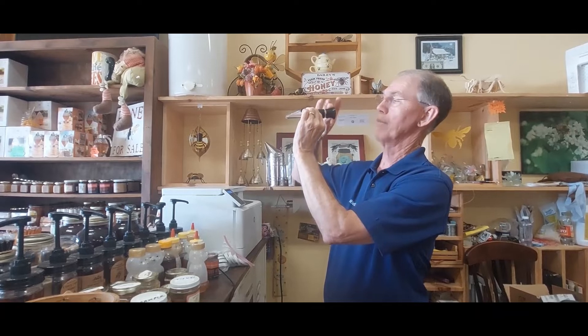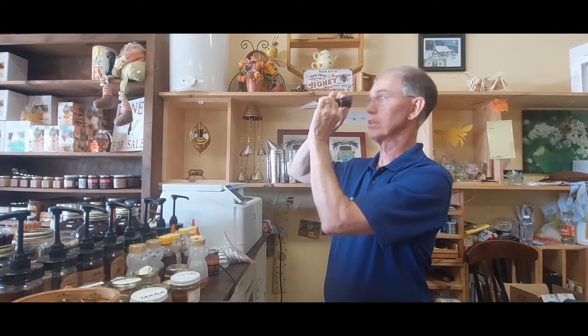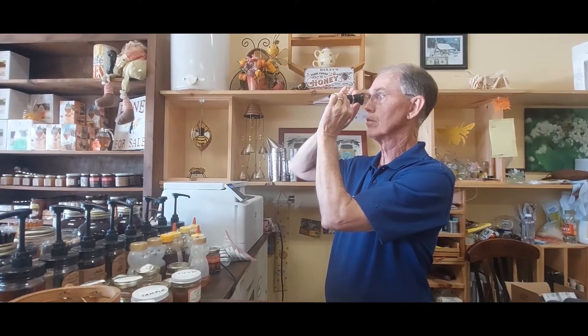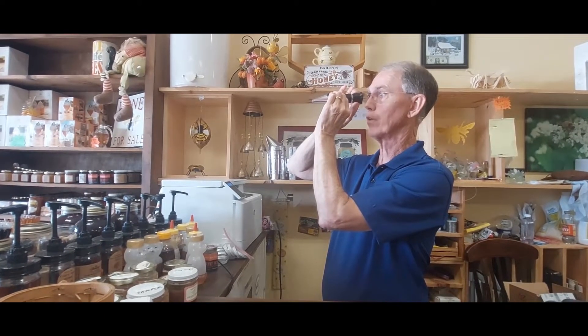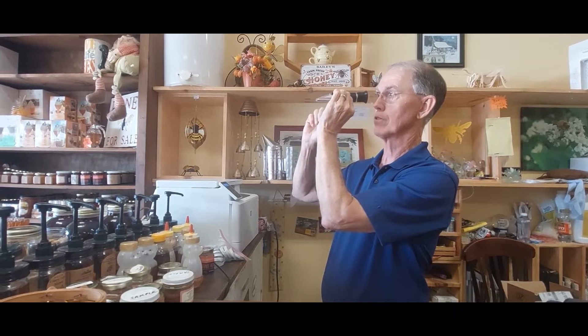You can grab the eyepiece and twist it back and forth to focus it so the numbers are in focus for you. And then you should see the top, you'll see a line, a division between blue at the top and white at the bottom. And that place right between those colors is your line that you want to read.